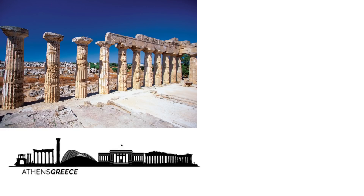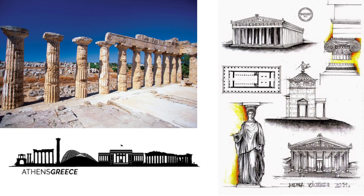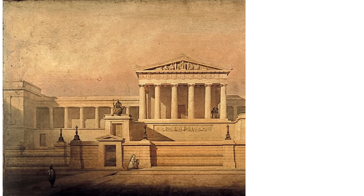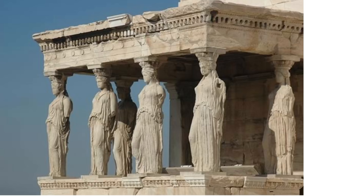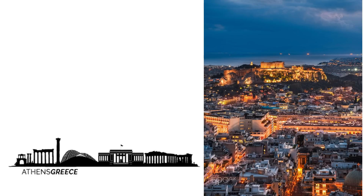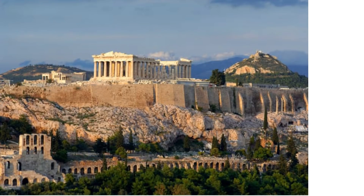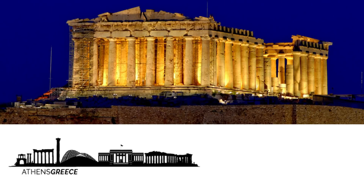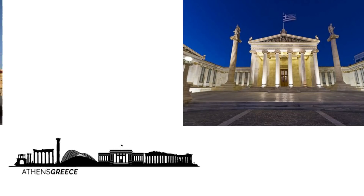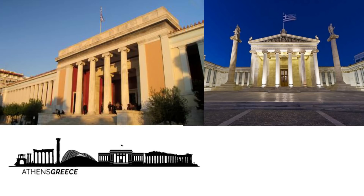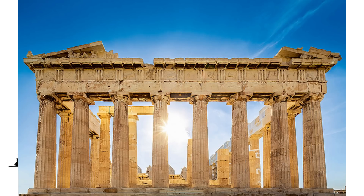Moving on to the capital of Greece, Athens. Greek architecture is known for tall columns, intricate details, symmetry, harmony, and balance. The most prominent structure is the Acropolis of Athens, an ancient citadel on a rocky outcrop above the city containing the remains of several ancient buildings of great architectural and historical significance — most famously the Parthenon. Adding to that is the National Archaeological Museum, which houses important artifacts from various archaeological sites around Greece. This skyline is totally dominated by tall columns present in almost all the structures.